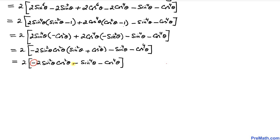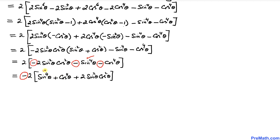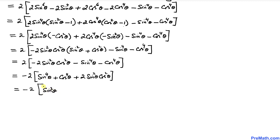Now there is a negative sign common across the board, so I can factor that out. Bringing the negative sign outside, I rearrange the terms inside the bracket as: sine to the power 4 theta, plus cosine to the power 4 theta, plus 2 sine squared theta cosine squared theta. In the next step, I write sine to the power 4 theta as sine squared theta squared, so all three terms inside the bracket form a perfect square.